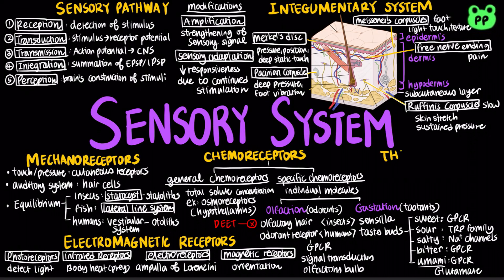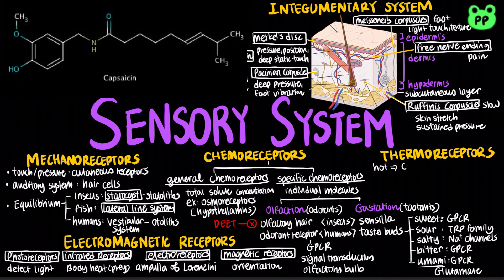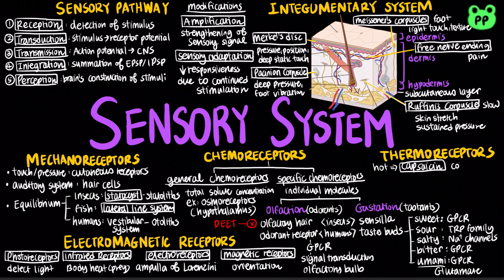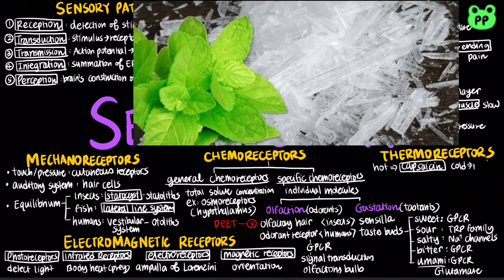Thermal receptors respond to heat and cold, which help regulate body temperature by signaling both surface and body core temperature. The receptor specific for high temperature is sensitive to capsaicin, which is also found in hot chili peppers. The thermal receptors responsible for cold temperature can be activated by menthol, which is also found in mint.